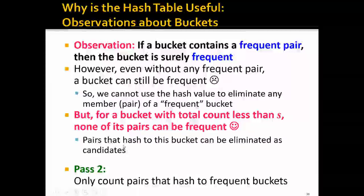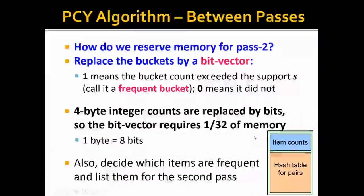In the second pass, we only need to count pairs that hash to frequent buckets. In the first pass, some memory is used to count individual items, and all the other memory is used to store the hash table.